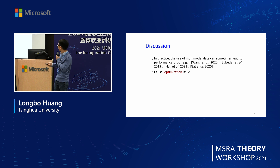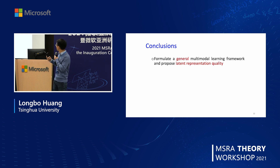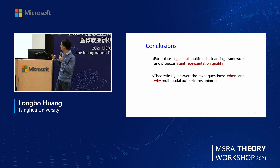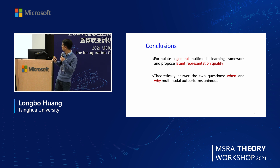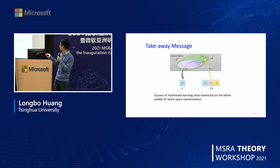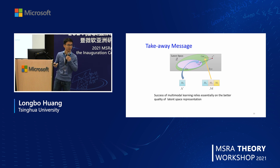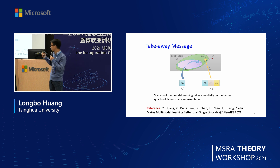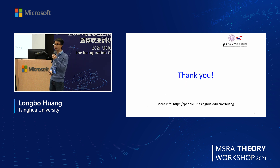In conclusion, we formulate a general multi-modality learning framework and propose latent representation quality as a metric to understand learning performance. We theoretically answer when and why multi-modality outperforms unimodal learning, providing new insights from a generalization perspective. The key takeaway is that using more modalities gives a representation closer to the true latent representation, leading to better performance. This work appears in NeurIPS.